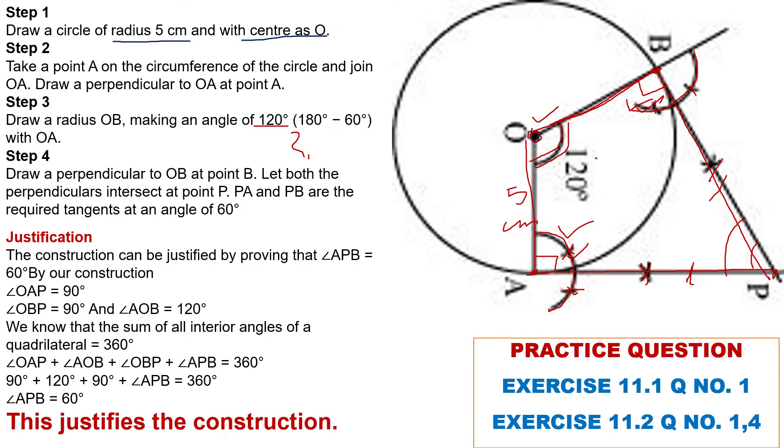90 through perpendicular, it is 120, then by the angle sum property of a quadrilateral it will be 60 degrees. So 60 degree angle we don't have to construct, it will already shift through the quadrilateral angle sum property. This is the justification of the construction.